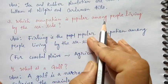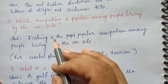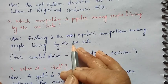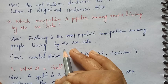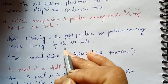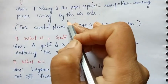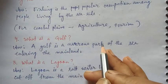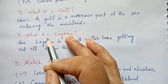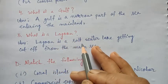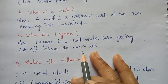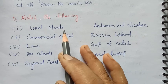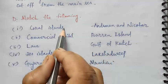The popular occupation among people living by the seaside is fishing. If asked about occupation in the coastal plain, you may also write agriculture, and tourism is also an occupation. A gulf is a narrow part of the sea entering the mainland. A lagoon is a saltwater lake that gets cut off from the main sea.